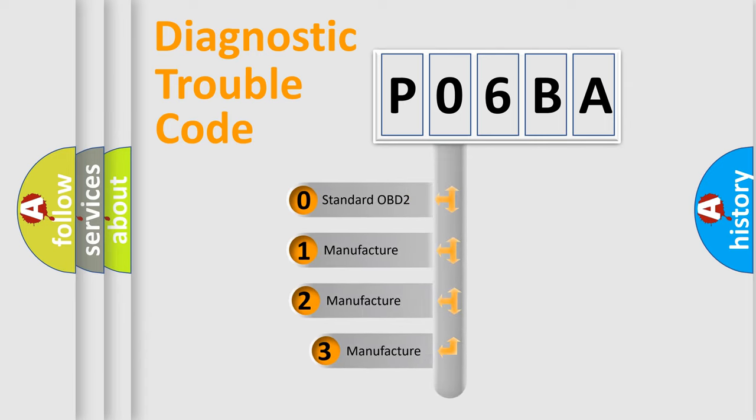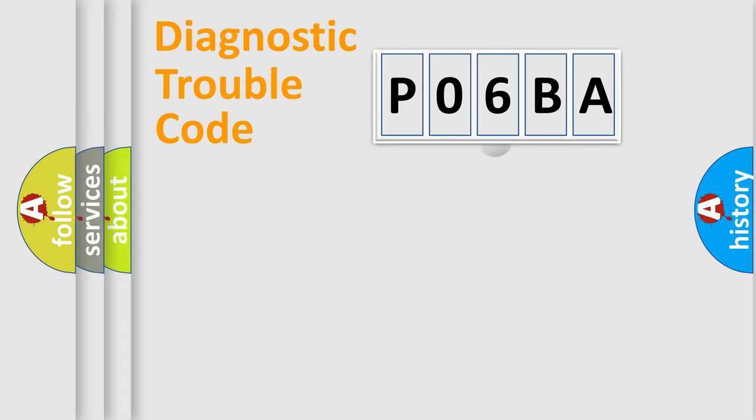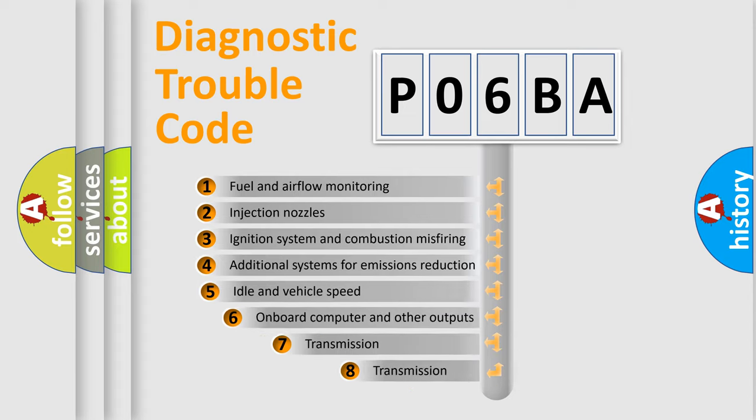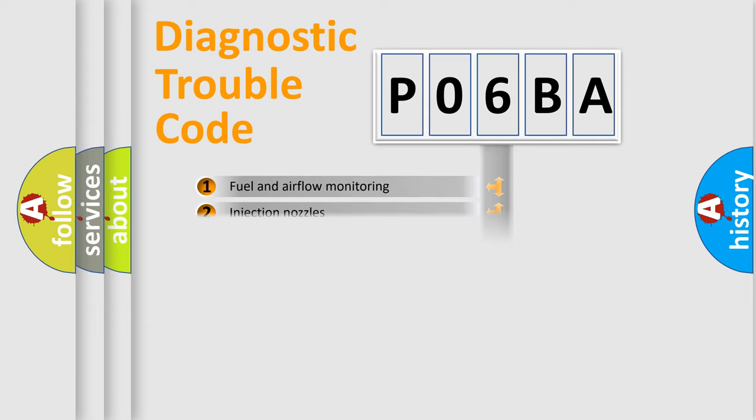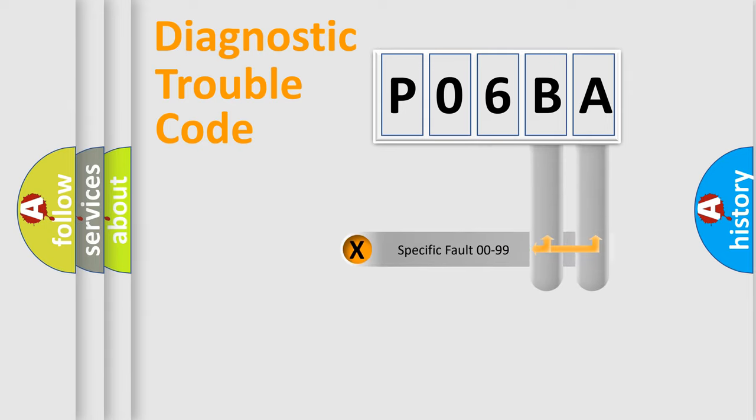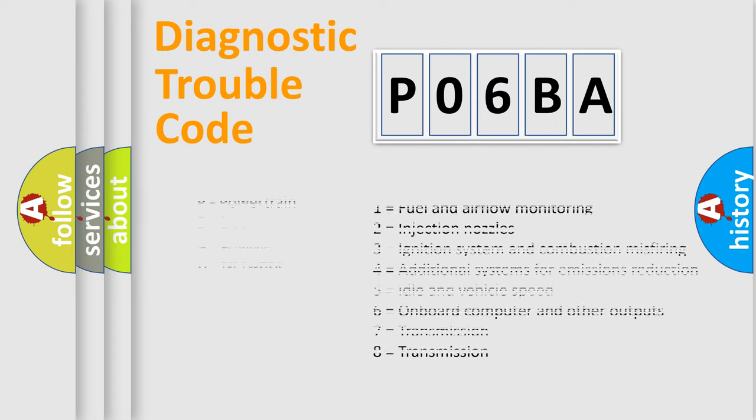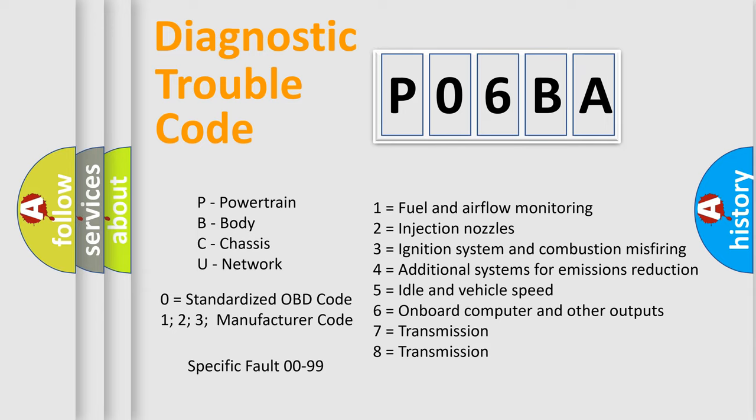If the second character is expressed as zero, it is a standardized error. In the case of numbers 1, 2, or 3, it is a car-specific error. The third character specifies a subset of errors. The distribution shown is valid only for the standardized DTC code. Only the last two characters define the specific fault of the group. Let's not forget that such a division is valid only if the second character code is expressed by the number zero.